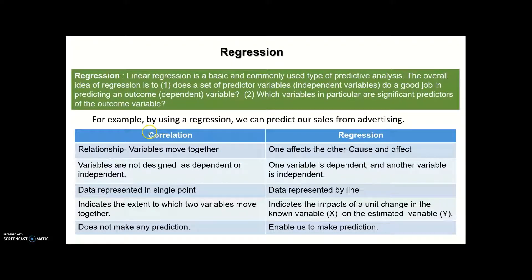There are some important differences between correlation and regression. In correlation, we look at the relationship — variables move together. On the other hand, in regression one variable affects the other, meaning we focus on the cause-and-effect relationship among variables. In correlation, variables are not designed as dependent or independent, but in regression one variable is dependent and the other is independent.